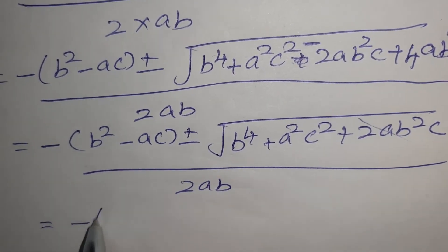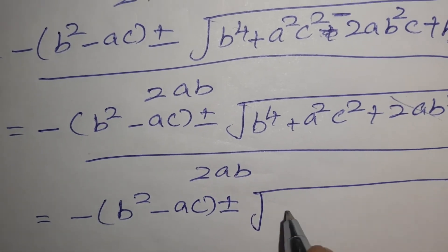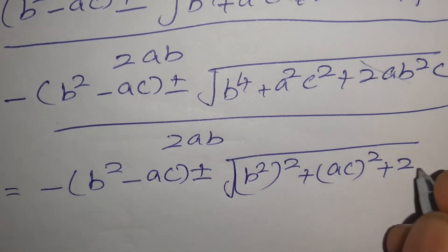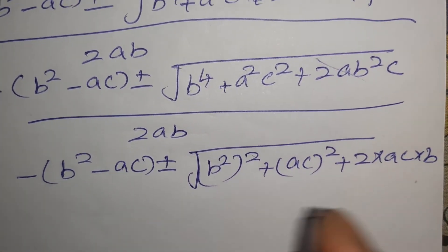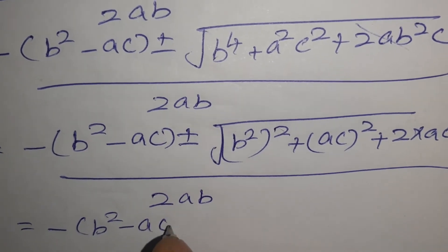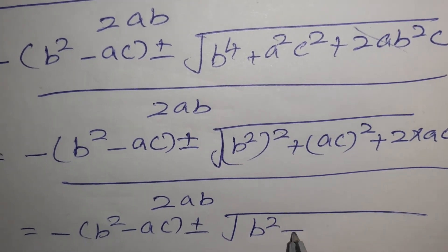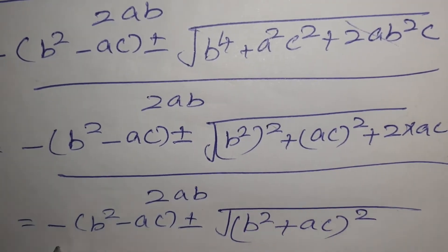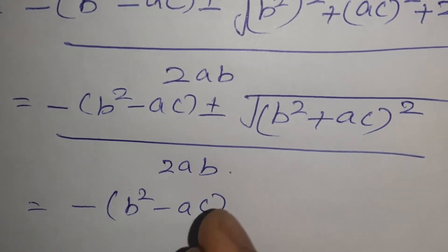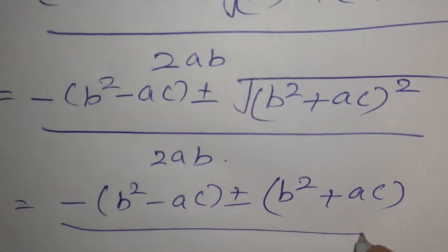That is equal to: −(B² − AC) ± √((B²)² + (AC)² + 2·AC·B²), divided by 2AB. Recognizing this as a perfect square: −(B² − AC) ± √(B² + AC)², divided by 2AB. So that simplifies to: −(B² − AC) ± (B² + AC), divided by 2AB.